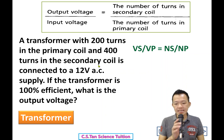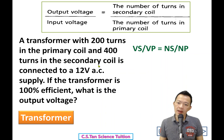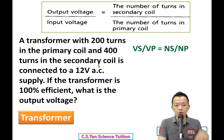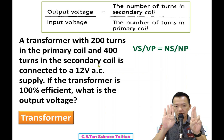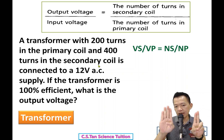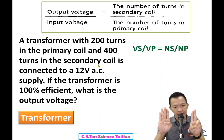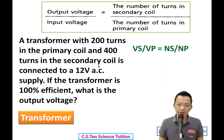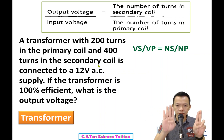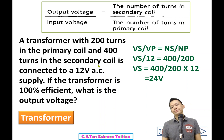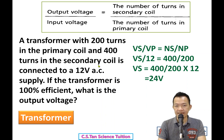Next question: a transformer with 200 turns in the primary and 400 turns in the secondary is connected to 12V AC. If the transformer is 100% efficient, what is the output voltage? The ratio is 1:2 — double — so input 12V gives output 24V.